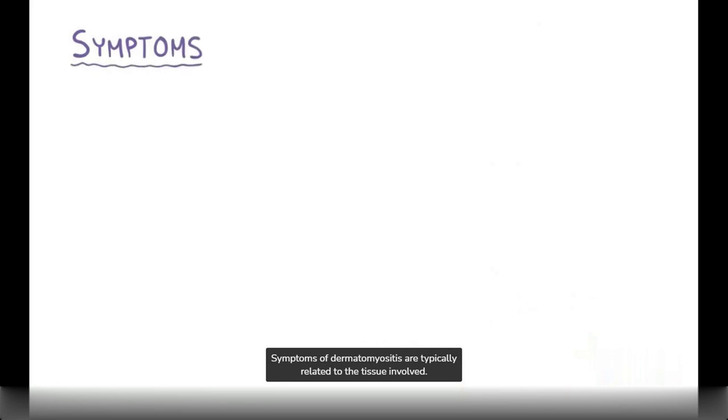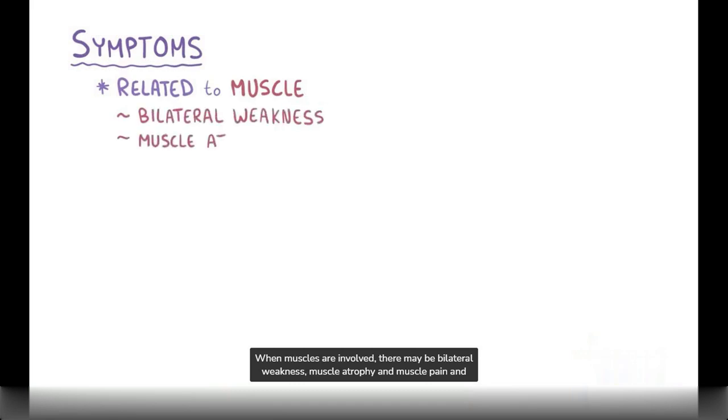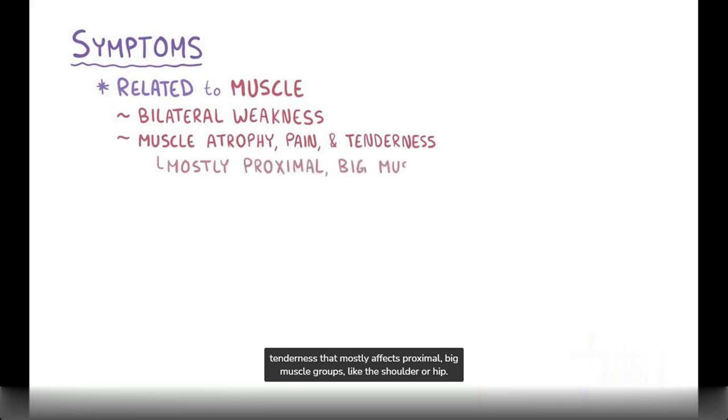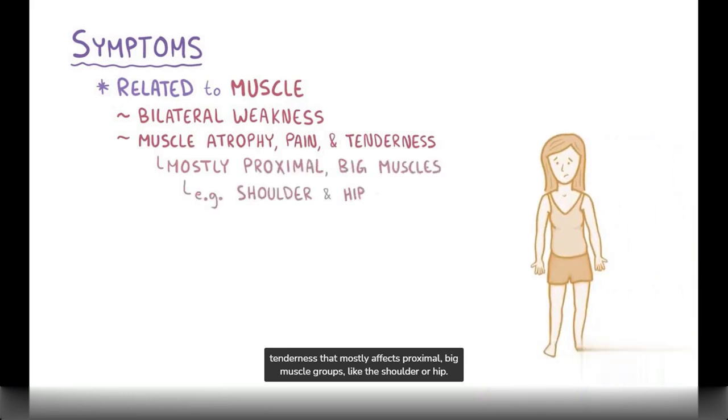Symptoms of dermatomyositis are typically related to the tissue involved. When muscles are involved, there might be bilateral weakness, muscle atrophy, and muscle pain and tenderness that mostly affects proximal, big muscle groups, like the shoulder or hip. That pattern of muscle weakness can cause difficulty getting out of a chair or combing hair.